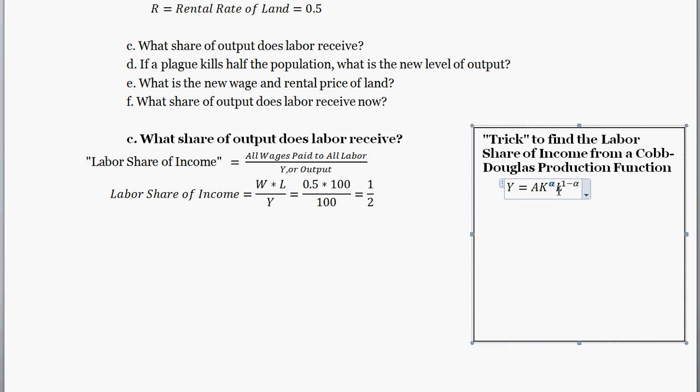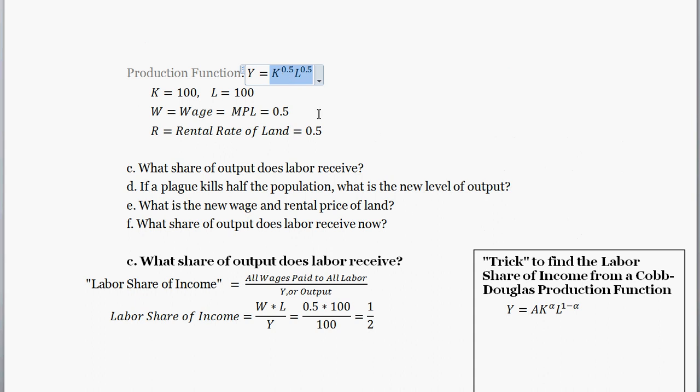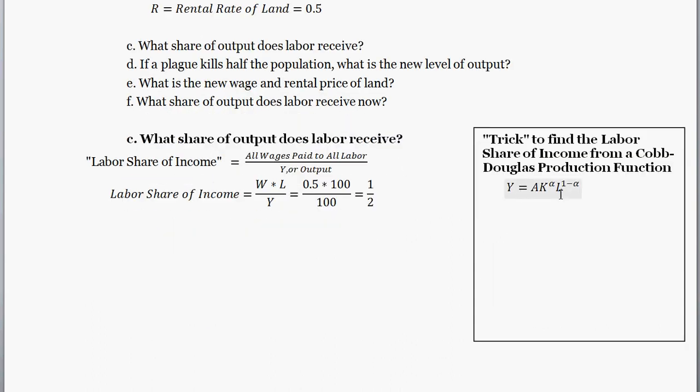And then alpha times L raised to the one minus alpha. Since alpha was one-half, one minus alpha is going to be one-half. So you can see this production function right here is a version of Cobb-Douglas, where alpha is one-half, and then A technology was just one. So this is a Cobb-Douglas production function. The other thing to note is its constant returns to scale. So if you were to double K and double L, you would double output. Similarly if you were to cut K and L in half exactly, you'd have output. Anywho, this is the form that a Cobb-Douglas production function takes.